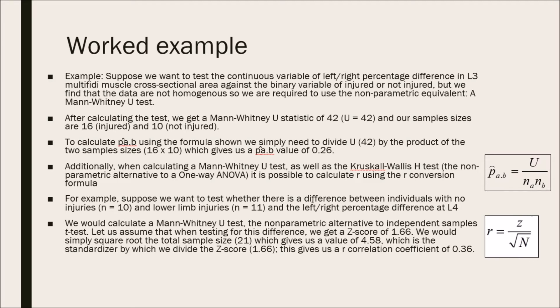For instance, suppose you want to test whether there is a difference between individuals with no injuries, N equals 10, and lower limb injuries, N equals 11, and the left-right percentage change at L4 multifidus muscle. We would calculate a Mann-Whitney U test, which is again the non-parametric alternative to the independent samples t-test, and let's assume that when testing for this difference, we get a Z-score of 1.66.